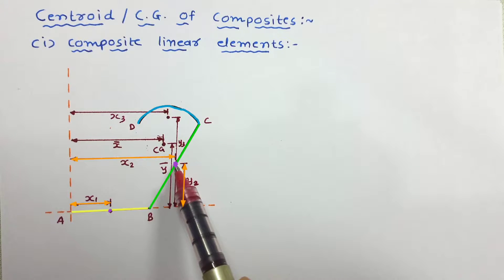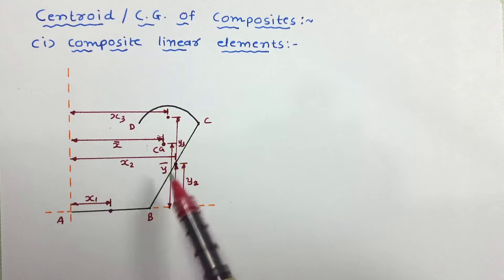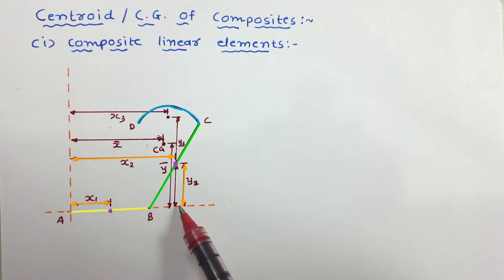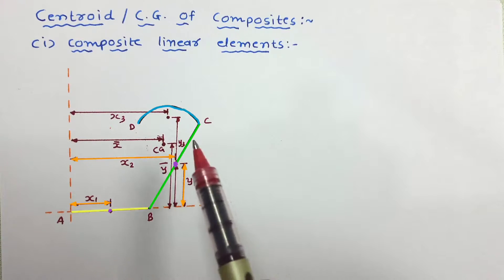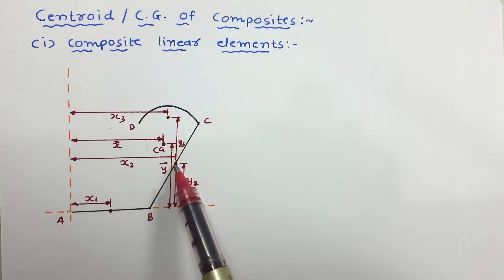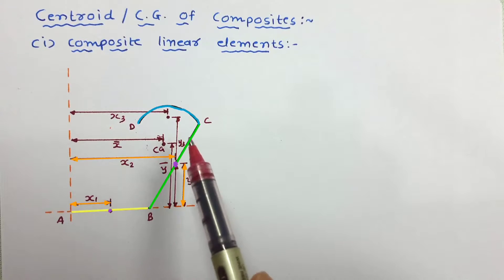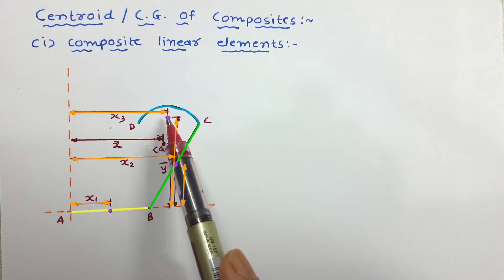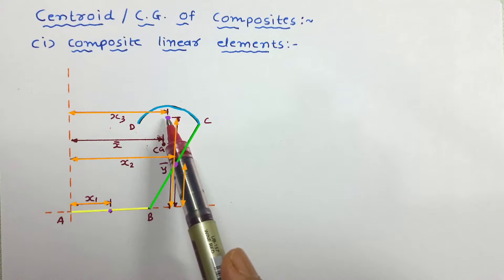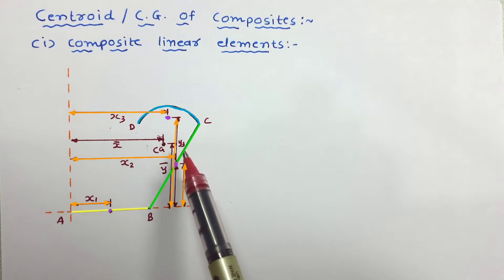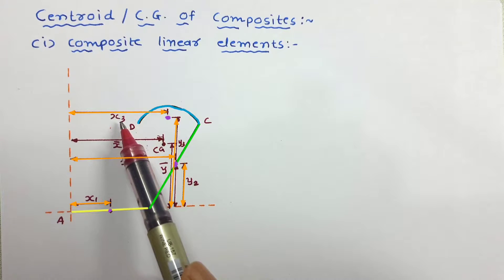This point is the centroid of second wire B-C. The distance of its centroid from the reference axis parallel to X-X is Y₂, and from the vertical reference axis is X₂. Similarly, for arc C-D, the centroidal distances from the X-X and Y-Y reference axes are Y₃ and X₃ respectively.